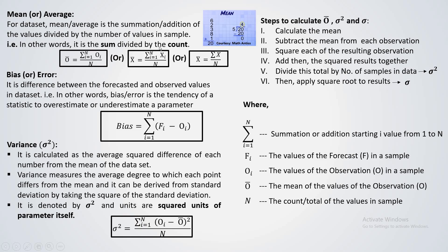Why did I mention the formula for the mean in three ways? Most of the time you may see the formula as x-bar equal to sigma from i equal to 1 to n of x_i over n, or x-bar equal to sigma x over n. When you see only sigma or sigma with i equal to 1 to n, the meaning remains the same. Don't get confused — the meaning is the same.